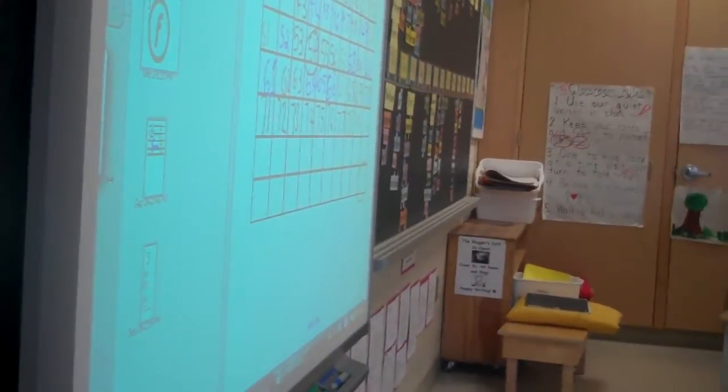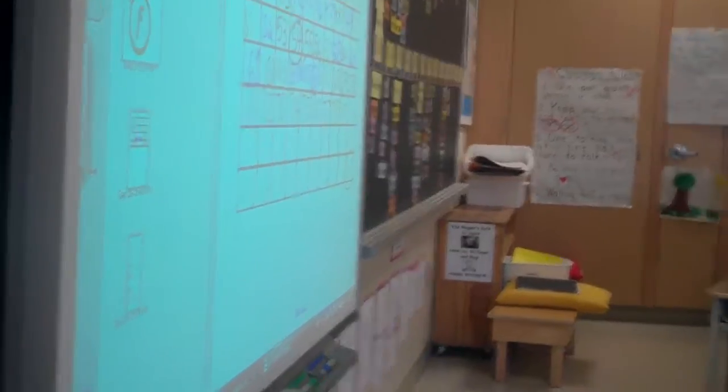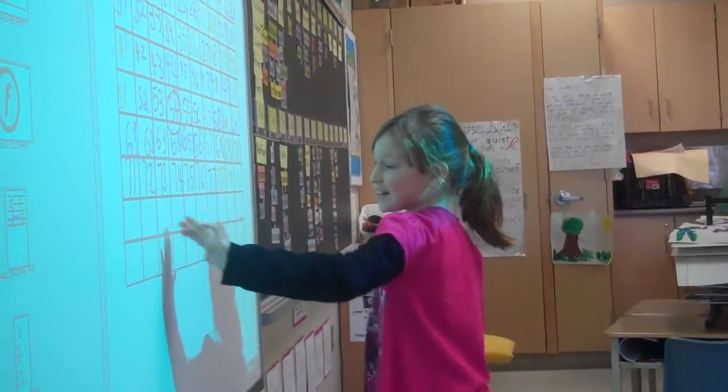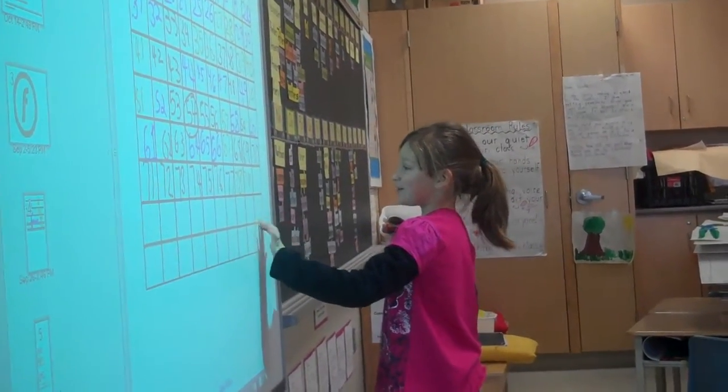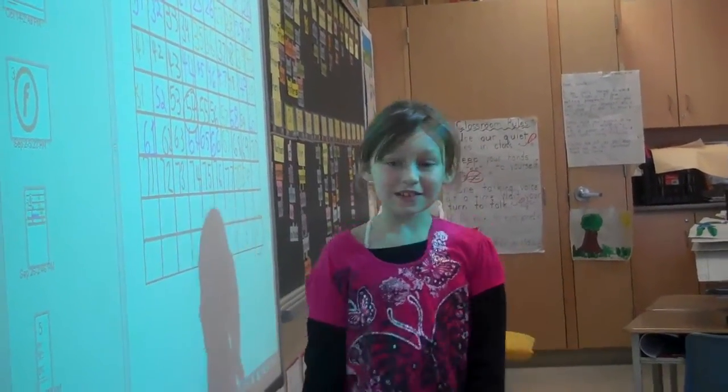Did anyone else figure this out a different way? I counted by 2, and then 2, 4, 6, 8, 10, 12, 14, 16, 18, 20, 21. So how many days? 21.